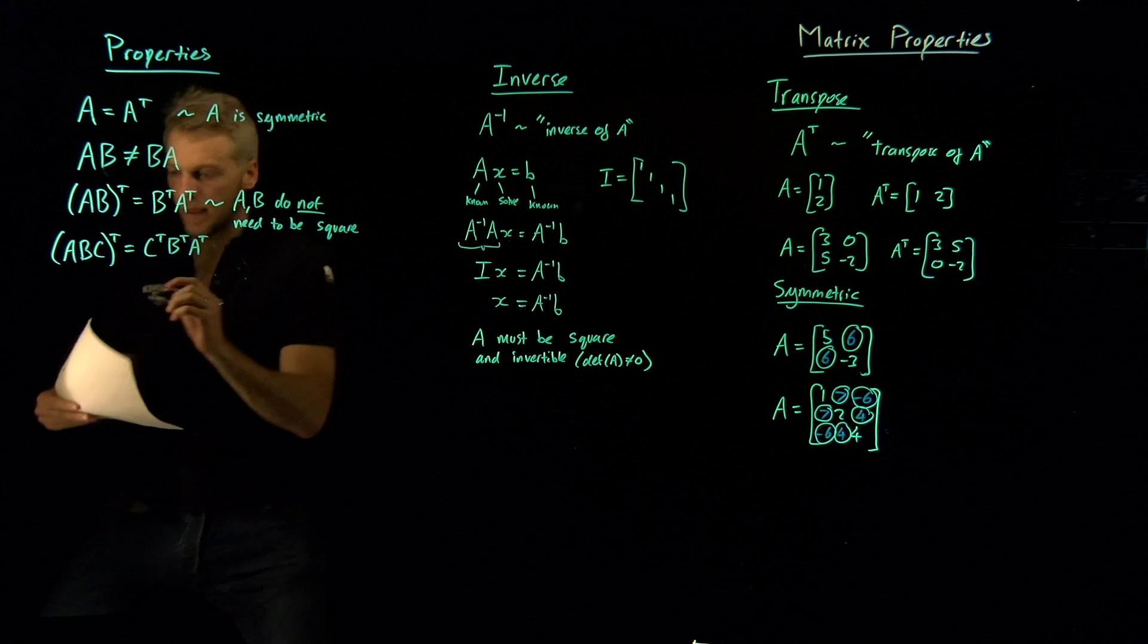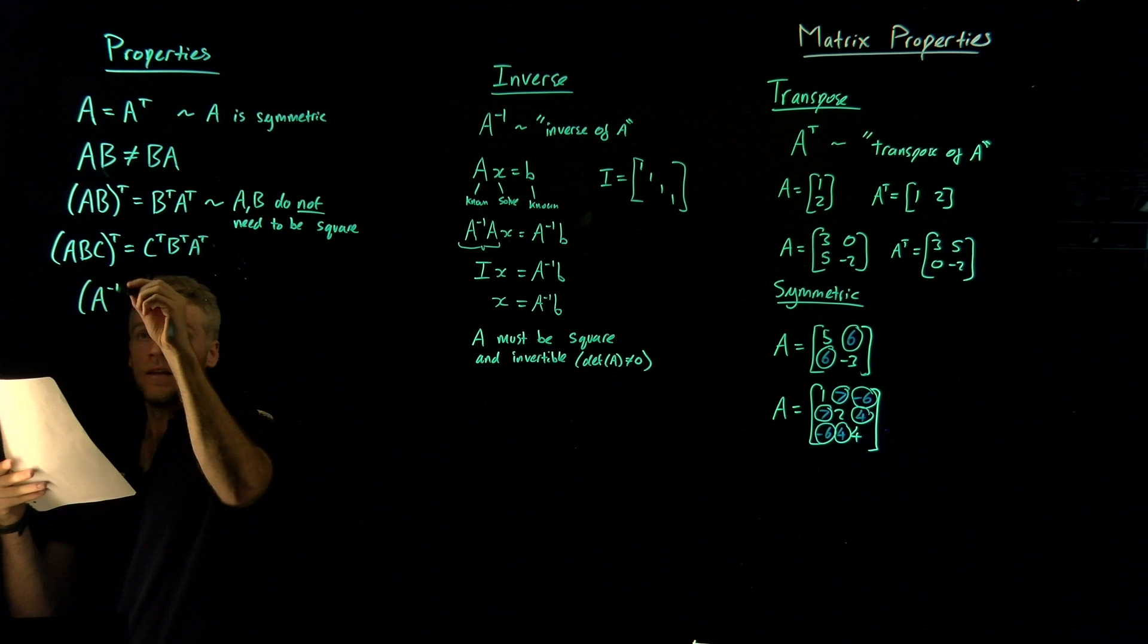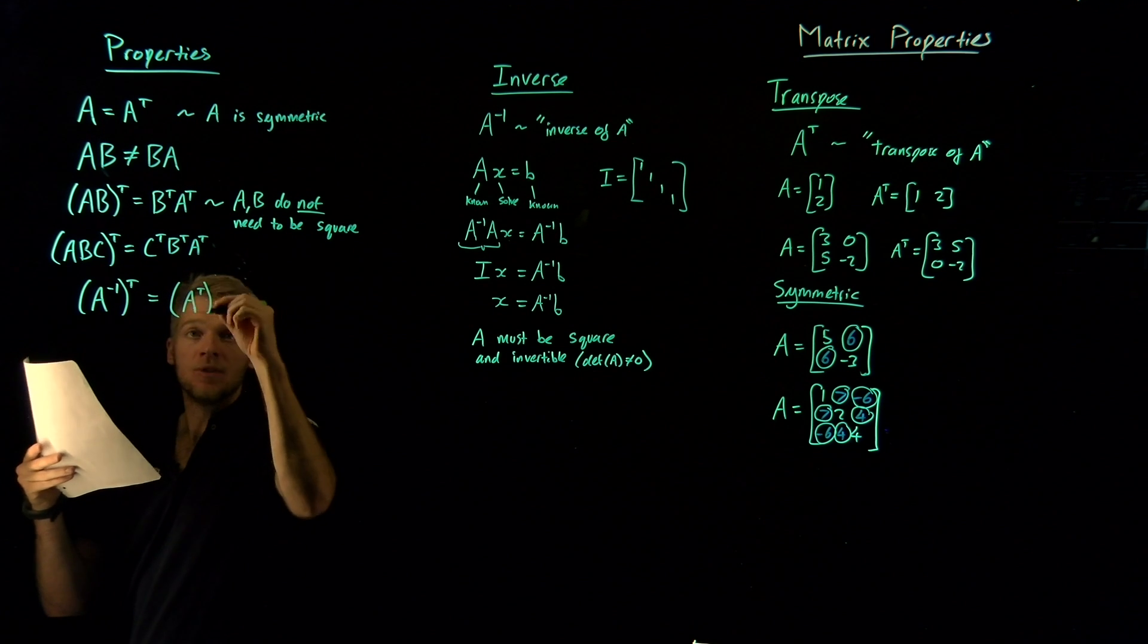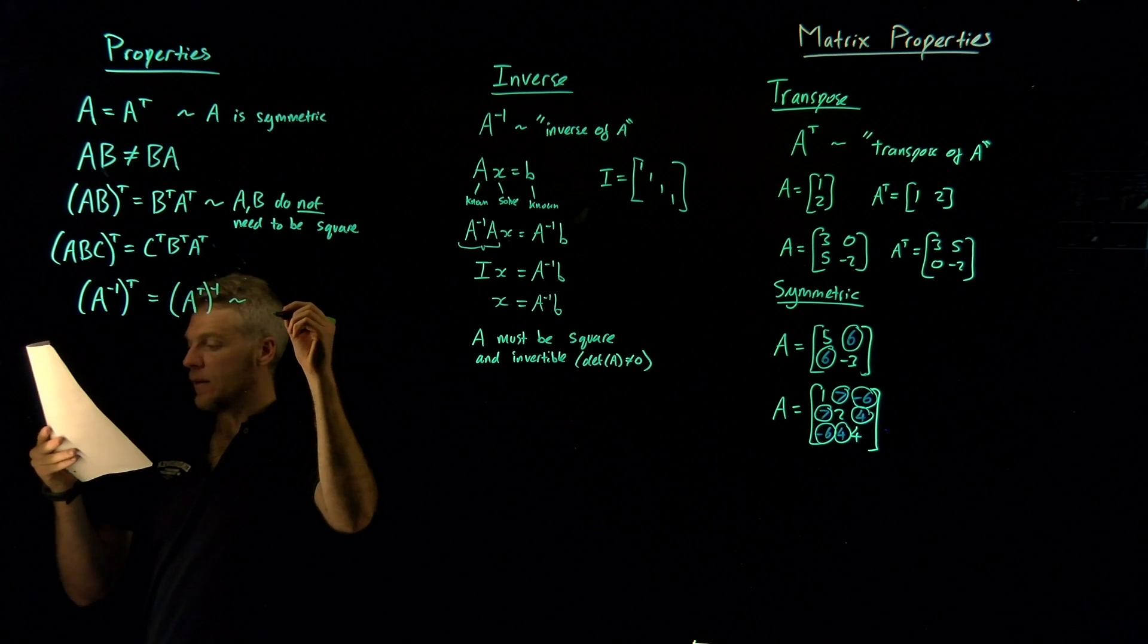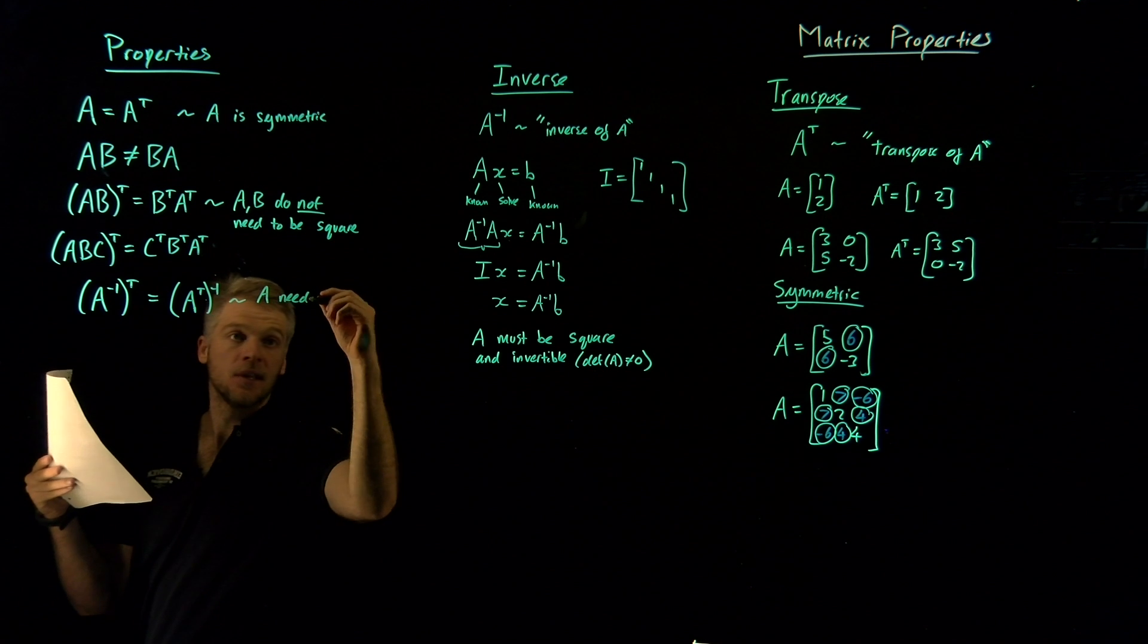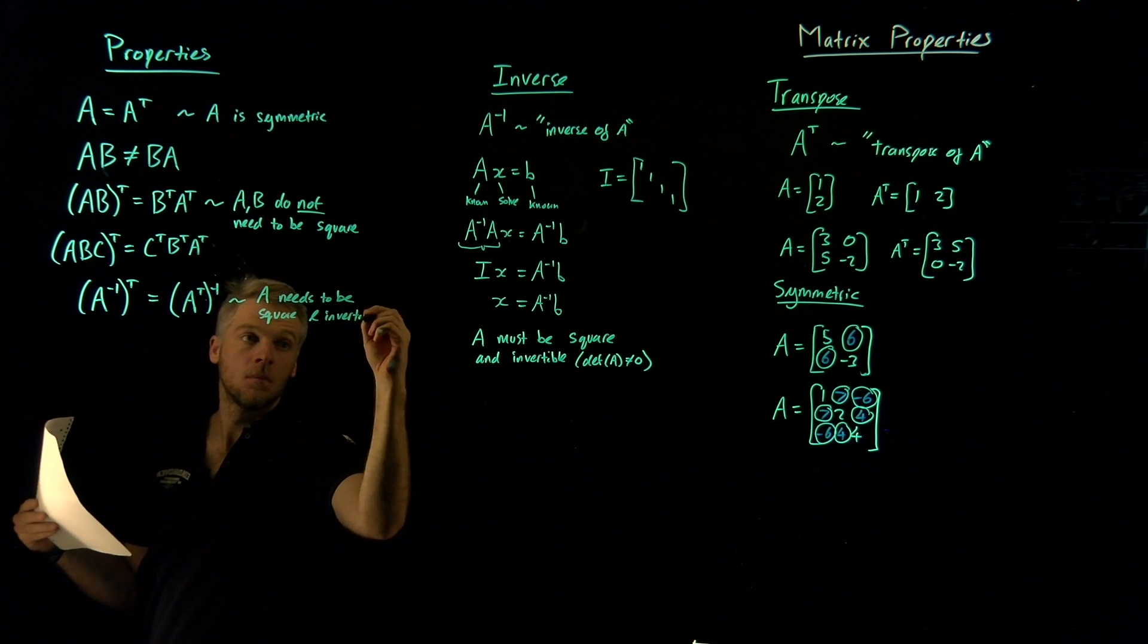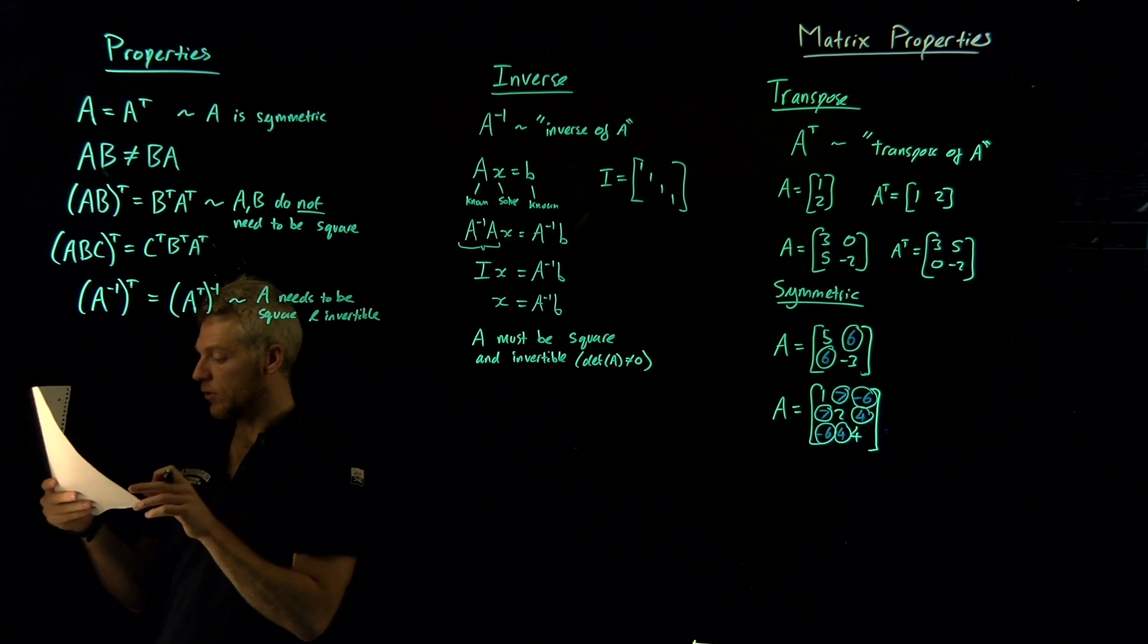Another useful property is this one. Let me write this down. This is going to be A inverse transpose. So first we invert it, then we transpose it. It turns out that will always be equal to A transpose inverse. So that's interesting. The order actually doesn't matter. But what does matter is that A needs to be invertible and it needs to be square. So that's interesting. So it really doesn't matter what order. And that's useful for some proofs, which we'll be covering later.